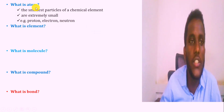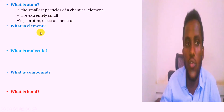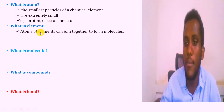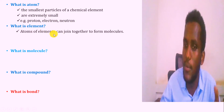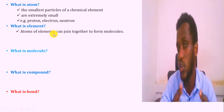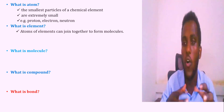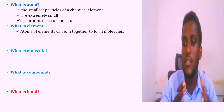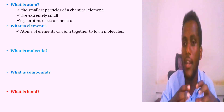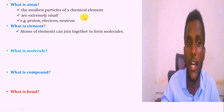These atoms can be joined together to form elements. Atoms of elements can be joined together to form molecules. A group of atoms combined together forms that element.